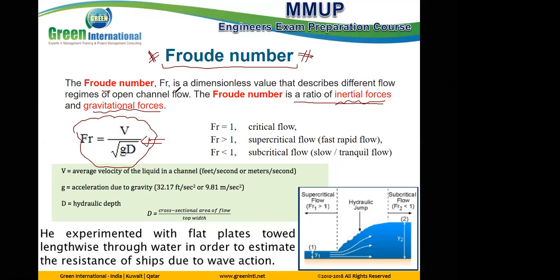It's very close to the definition of Reynolds number, and it has come up in exams before. If a numerical problem comes, the equation should be given. For Froude number, Reynolds number, and Mach number — are the definitions or equations most important? All definitions are important, but numerical applications come a lot for Reynolds number.